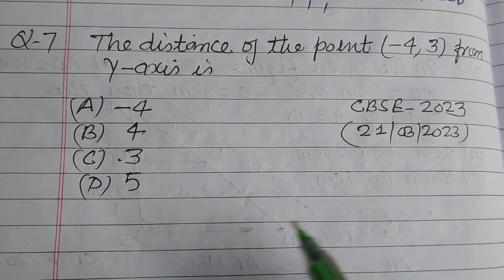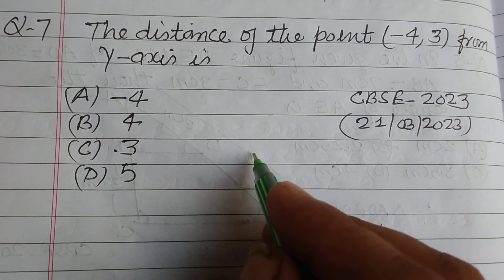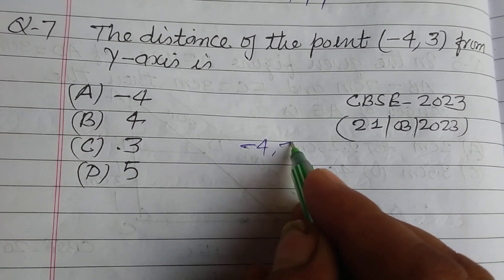So the distance of the point is (-4, 3). First, we draw the Cartesian plane.